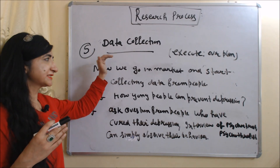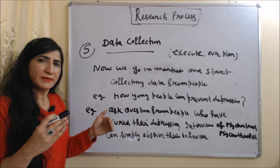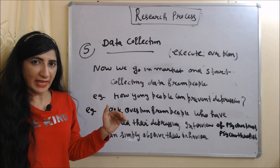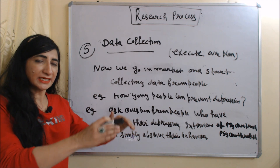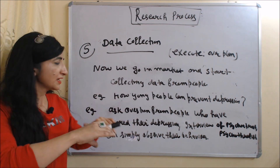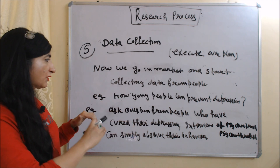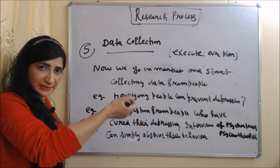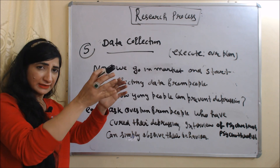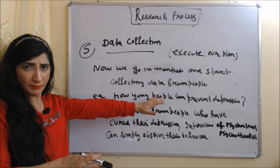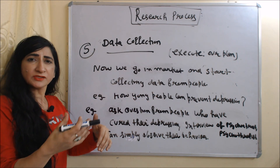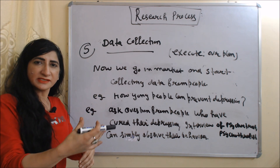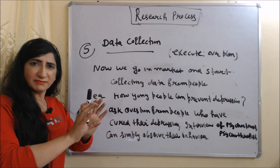The next step is data collection. Now we will execute our plan — we go into the market and start collecting data. Our research problem was how young people can prevent depression, and we will collect information related to our problem. There are many methods of data collection, such as questionnaire, survey, or observation.